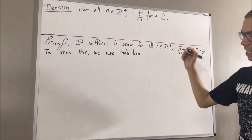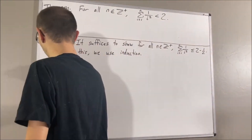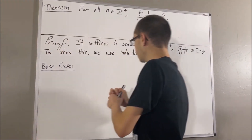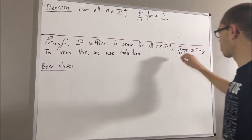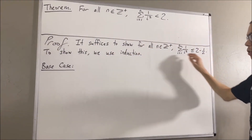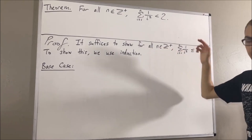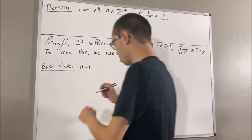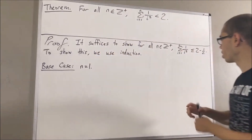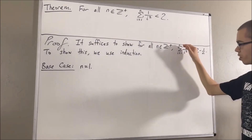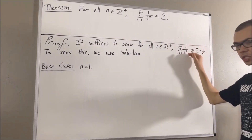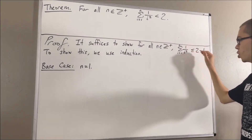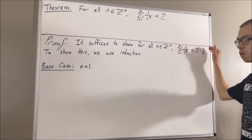So let's start with the base case. In the base case, we're trying to show that this is true in the case where n is equal to 1. So really, we want to show that the sum from i equals 1 to 1 of 1 over i squared is less than or equal to 2 minus 1 over 1.